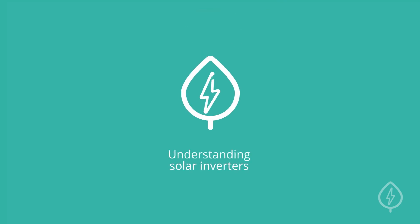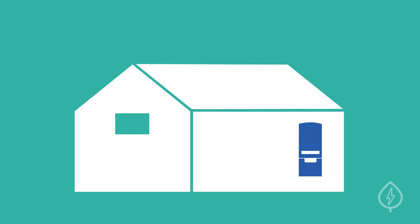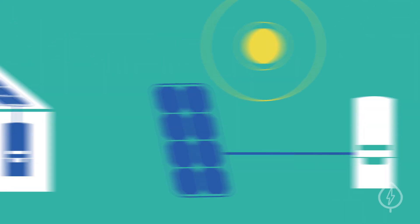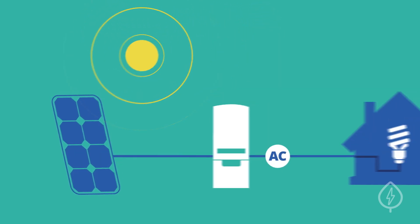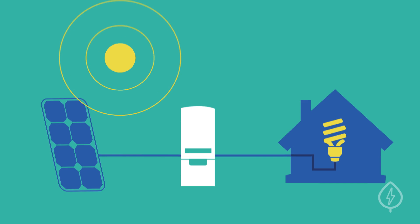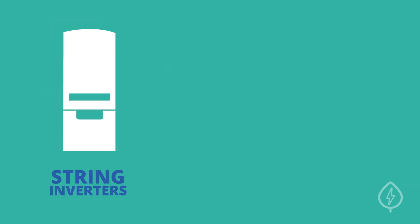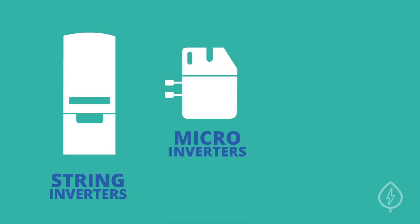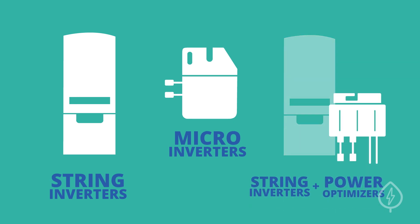An inverter is one of the most important parts of a solar panel system. It converts the direct current electricity your solar panels generate into alternating current electricity that your home can use. There are three major options to consider: string inverters, microinverters, and string inverters paired with power optimizers.